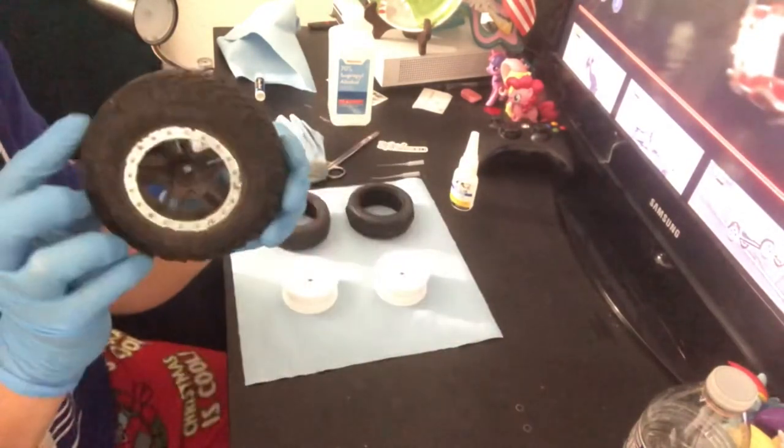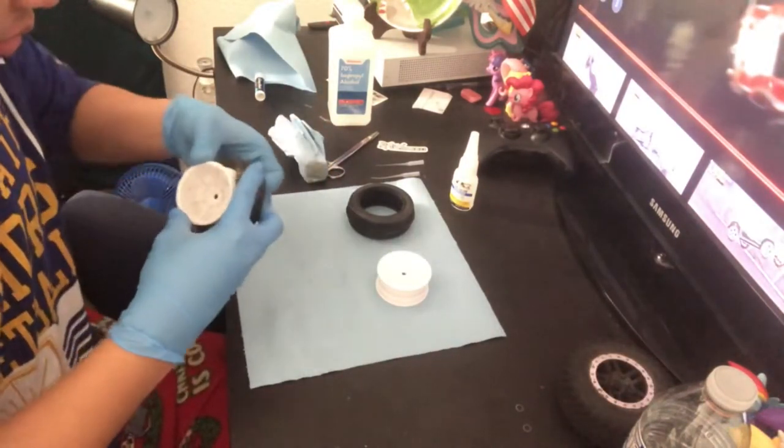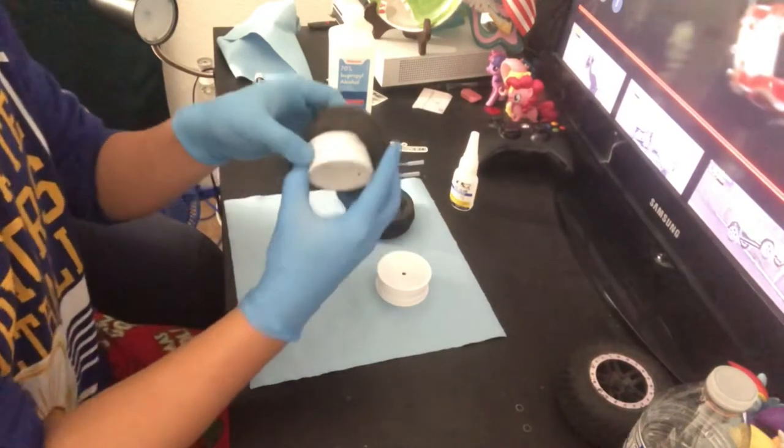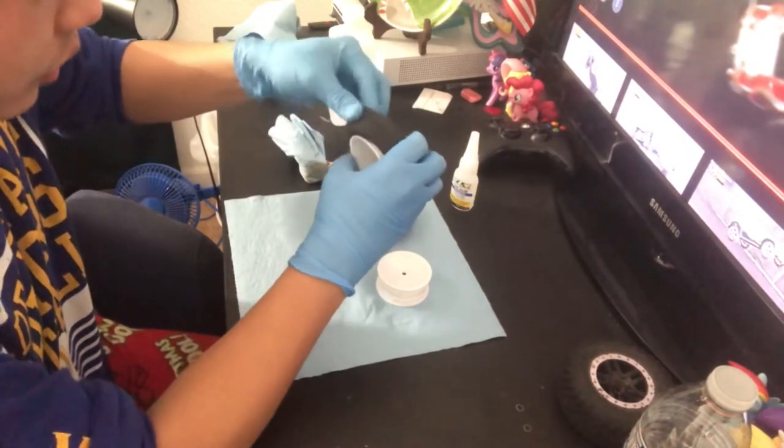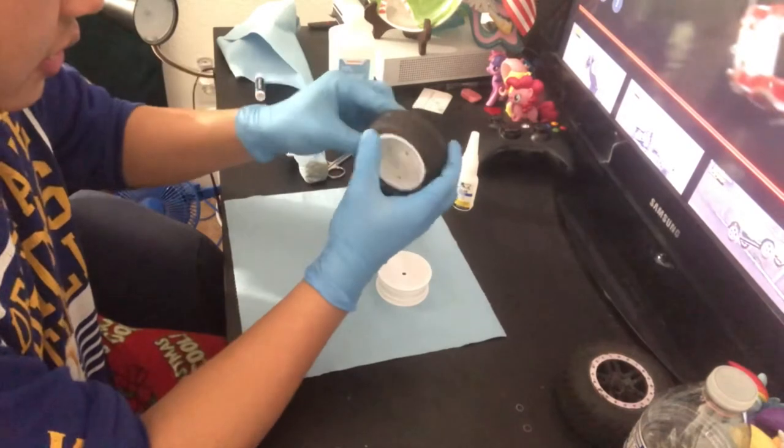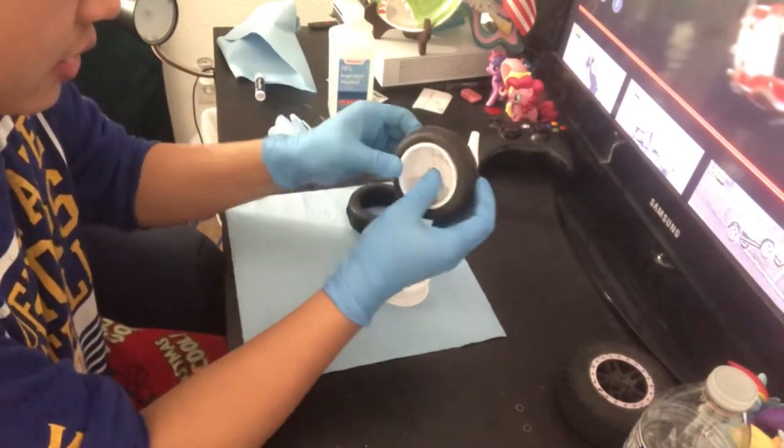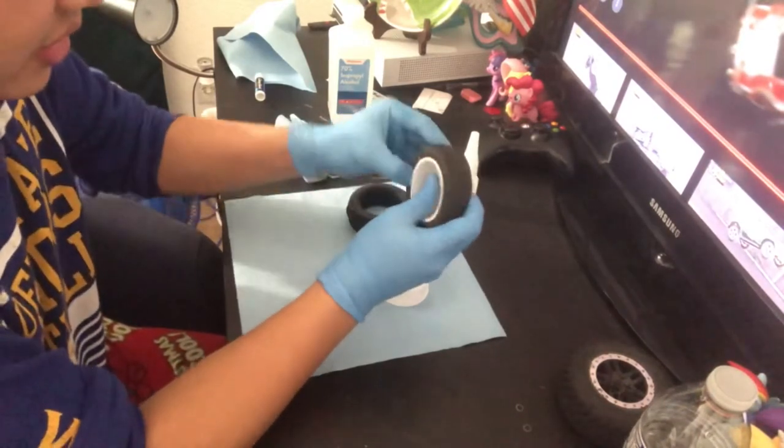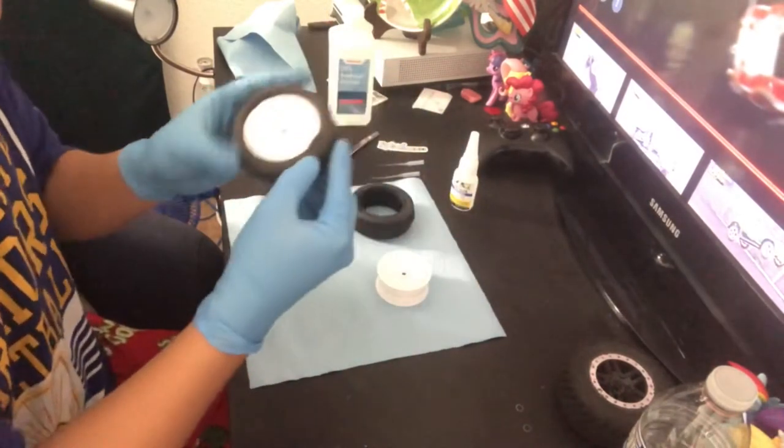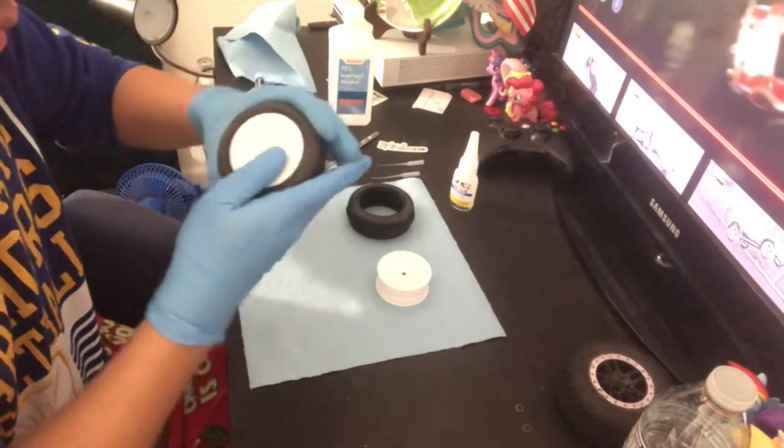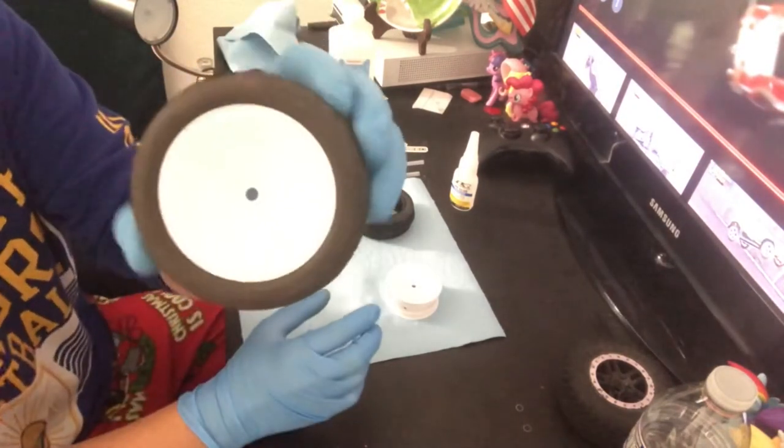You just gotta leave it in, get it in there eventually, just get it over those two dimples. Once they're in, they're in. I made a mistake right there. Okay, there we go, much better. The tire is now installed on the wheel.